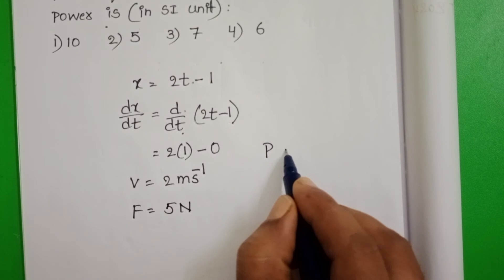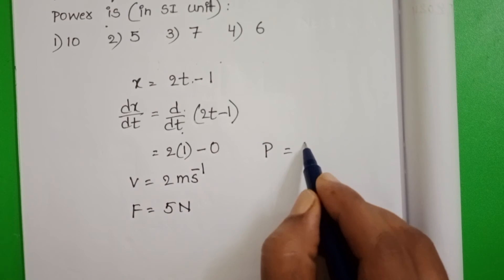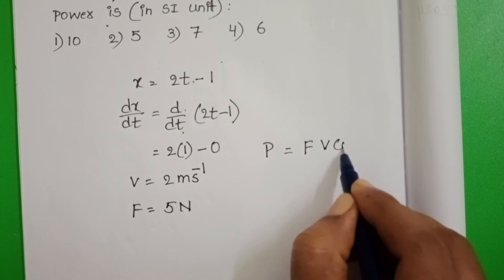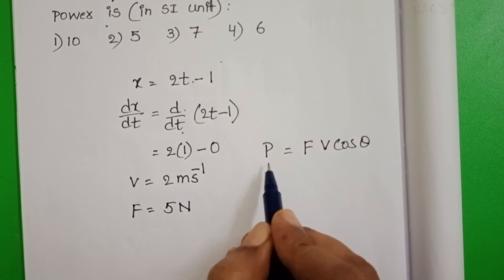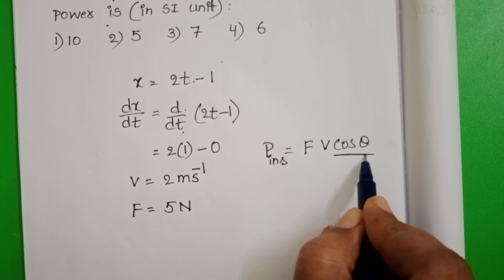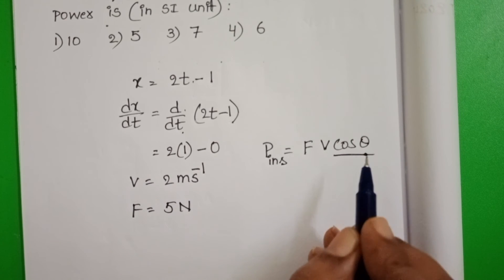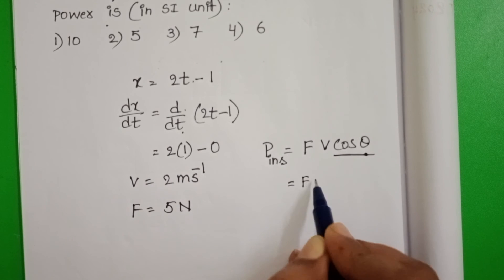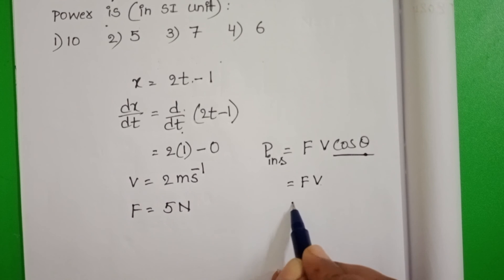The formula of instantaneous power: force into velocity into cos theta. But this is instantaneous power. Take cos theta value is 1. Actually no need of any direction. So instantaneous power is the product of force and velocity.